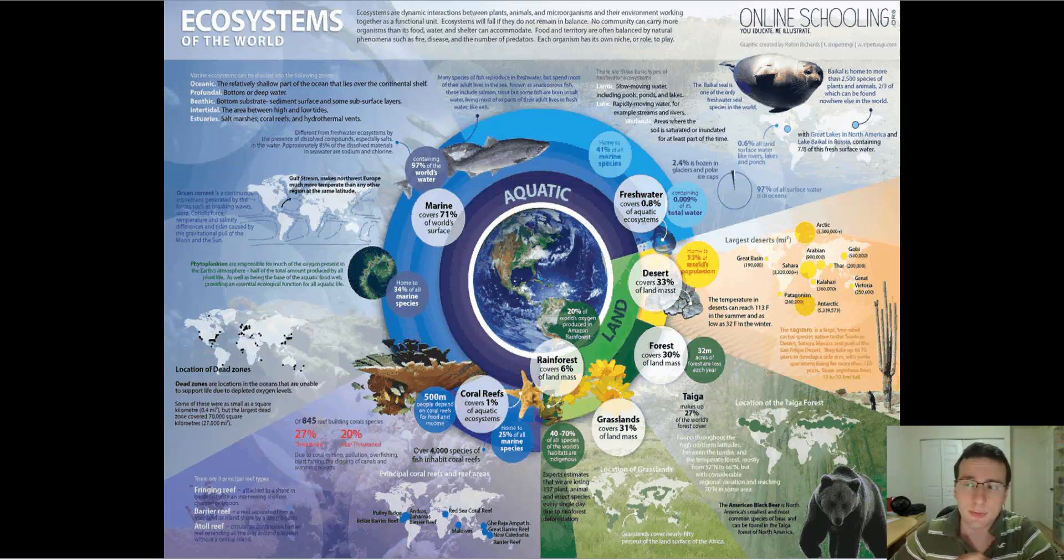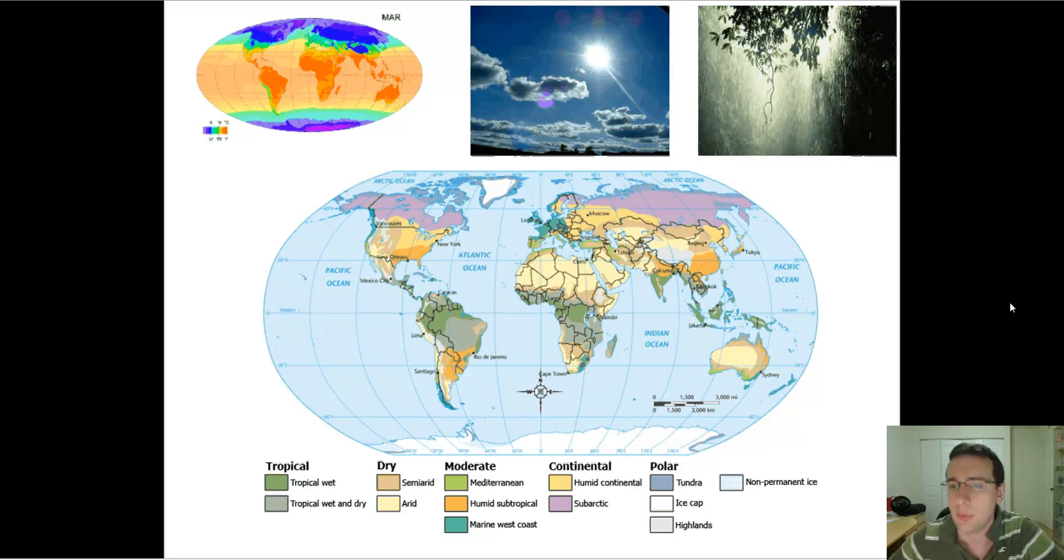But remember, the ecosystems of the world are going to be based on two main factors of climate: the temperature of the ecosystem and the precipitation level or the amount of water that exists there. There's a lot of different things which can play with the amount of heat that the area receives and with the amount of water that the area receives. But depending on those two factors, you're going to determine whether the ecosystems are going to be one way or the other.